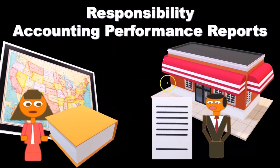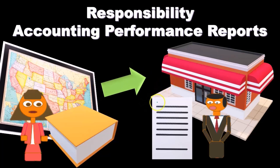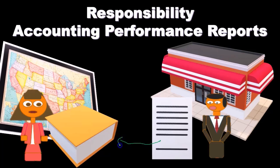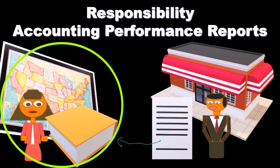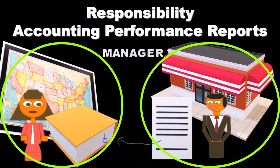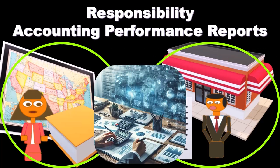For example, at the store level we have a very detailed report of the controllable costs. For the regional manager — the vice president of the region — that report is going to be summarized, because they don't need as much detail. They're not on the ground level controlling those costs; that's the job of the store manager.